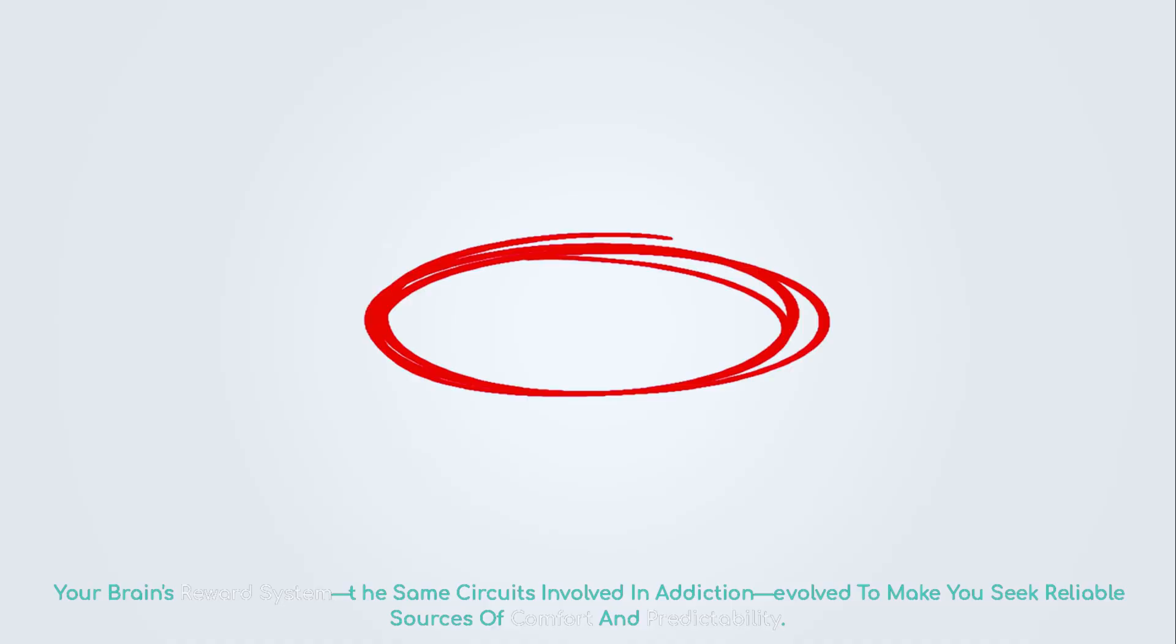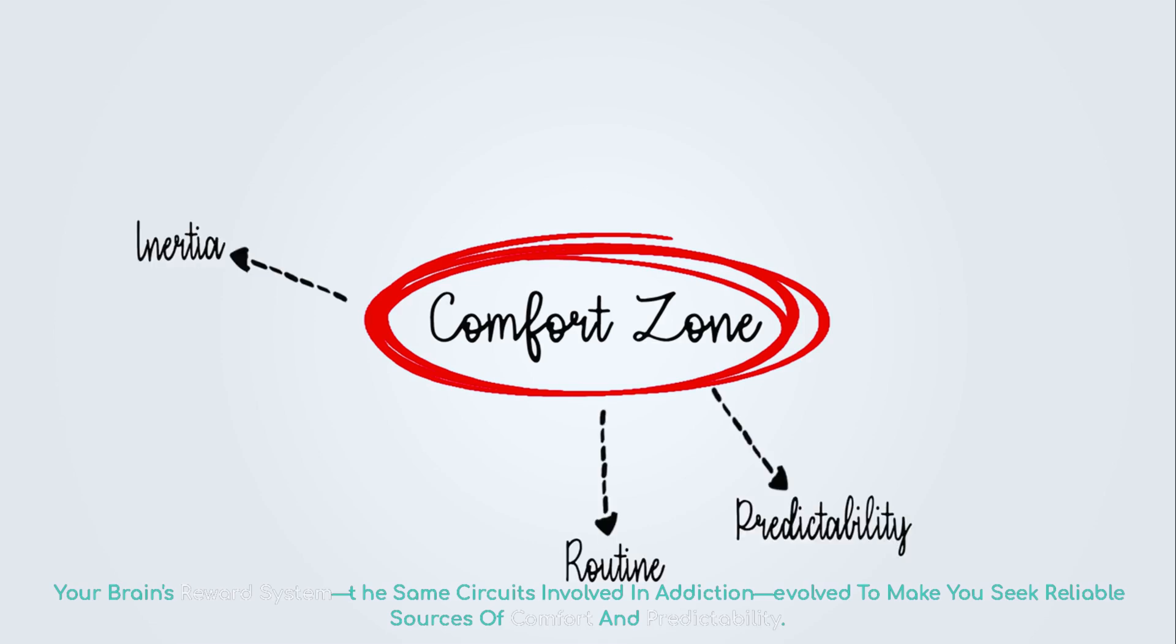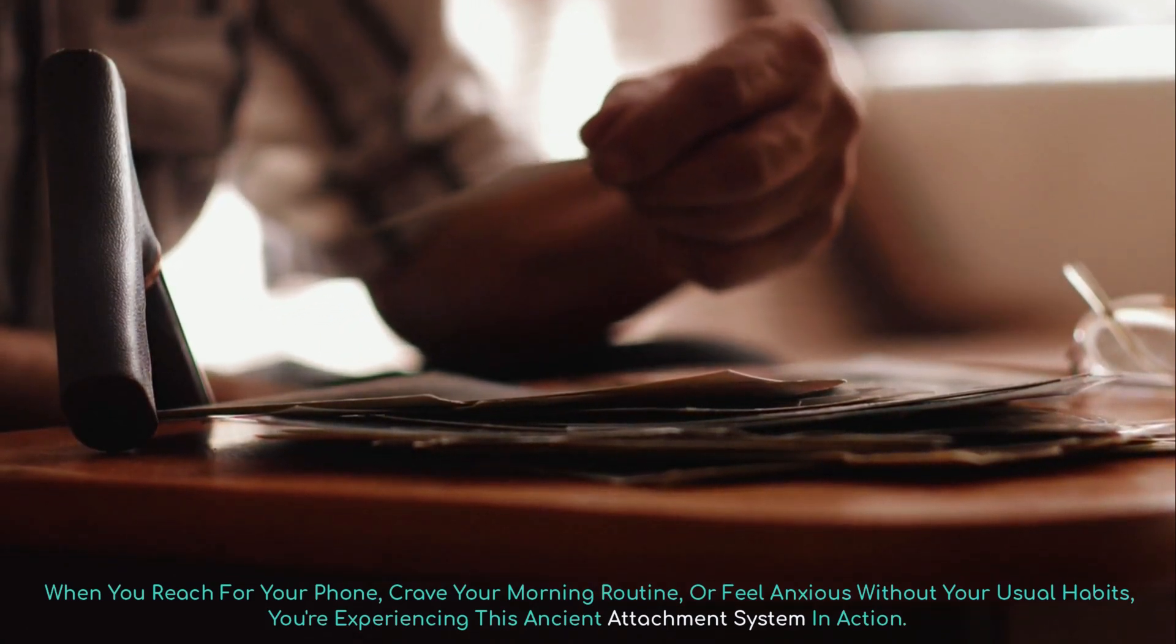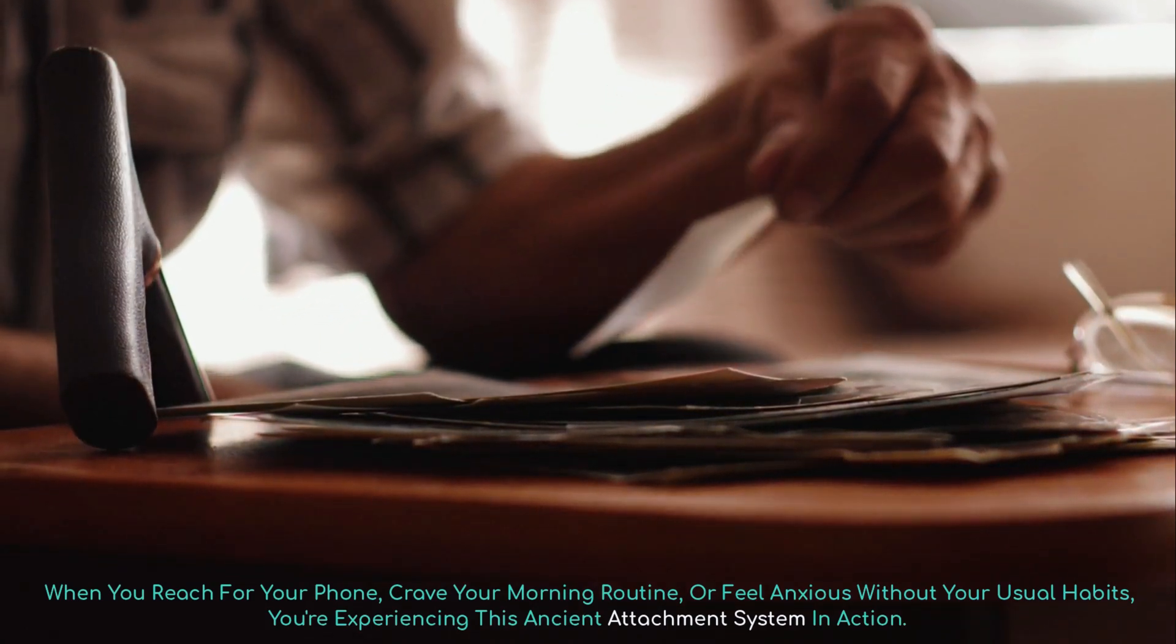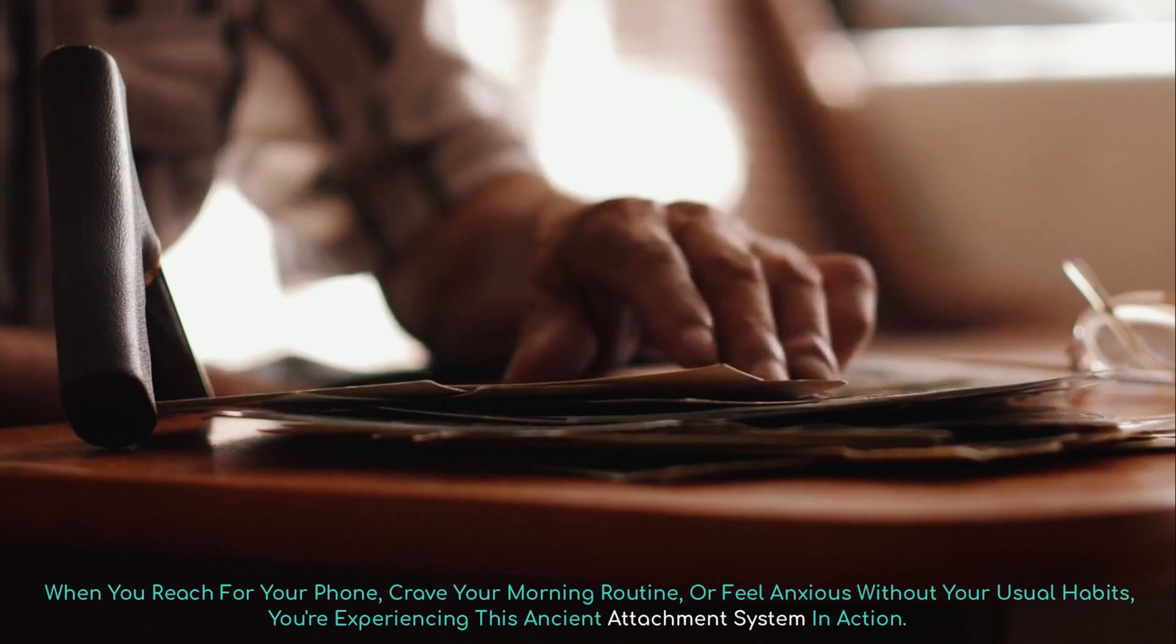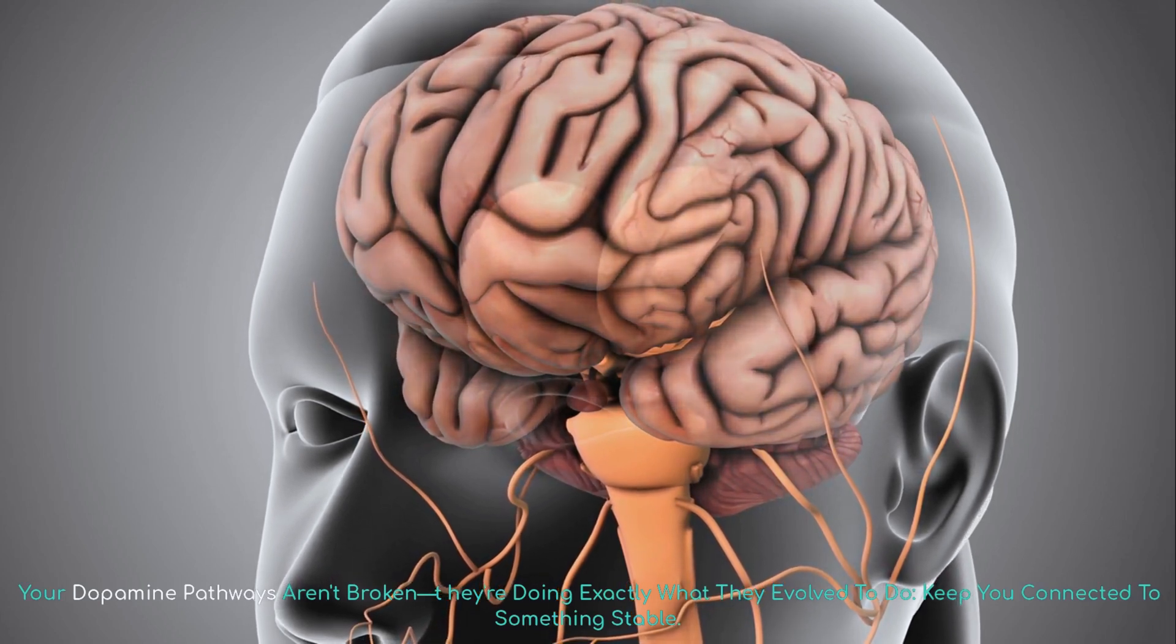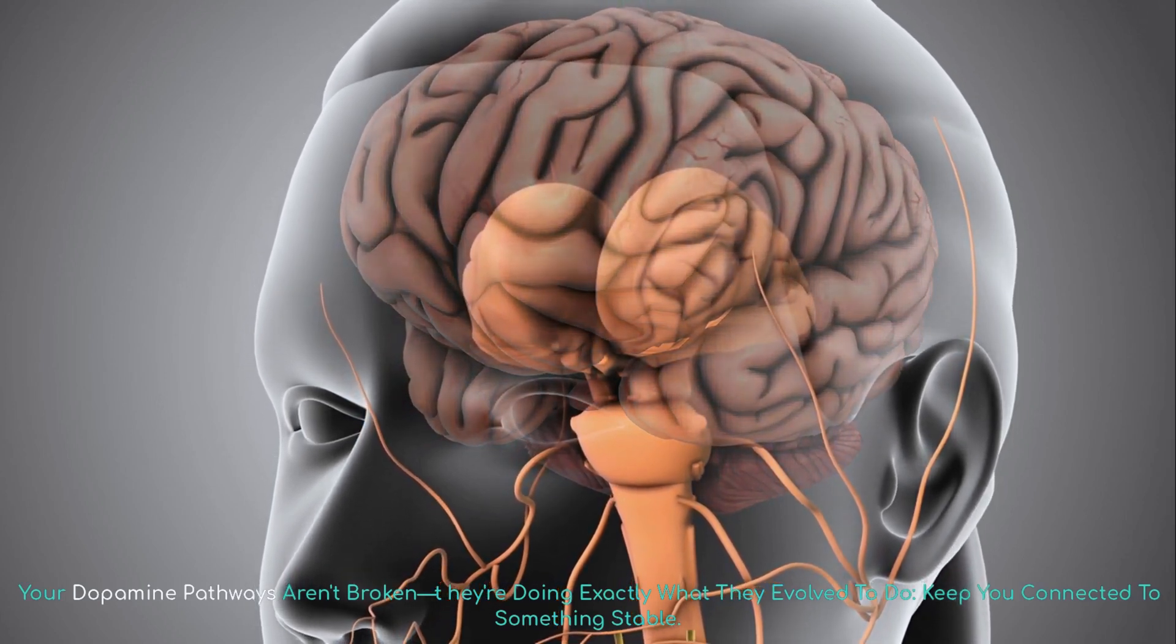Instead, it revealed that attachment itself is survival. Your brain's reward system—the same circuits involved in addiction—evolved to make you seek reliable sources of comfort and predictability. When you reach for your phone, crave your morning routine, or feel anxious without your usual habits, you're experiencing this ancient attachment system in action. Your dopamine pathways aren't broken—they're doing exactly what they evolved to do: keep you connected to something stable.